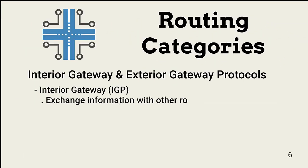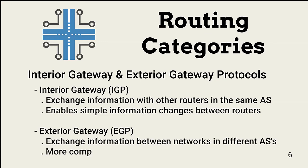Continuing with protocol categories: interior gateway protocols usually exchange information between routers within the same network or AS. External gateway routers communicate with routers in other ASs, enabling cross-AS communication.